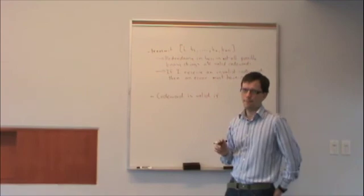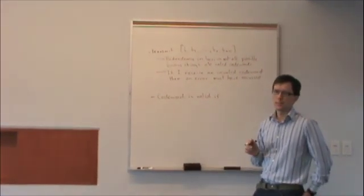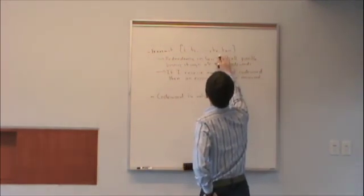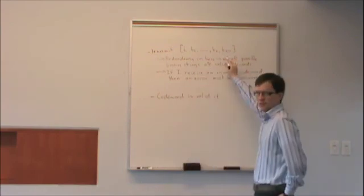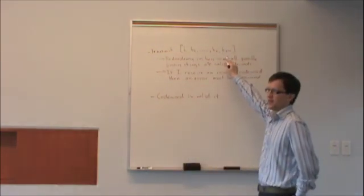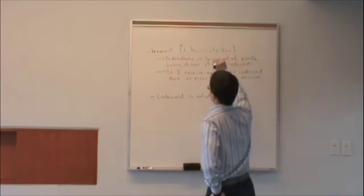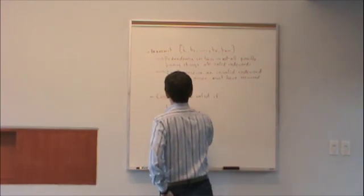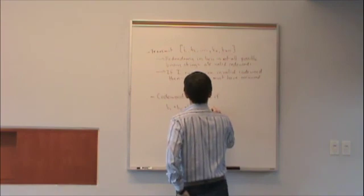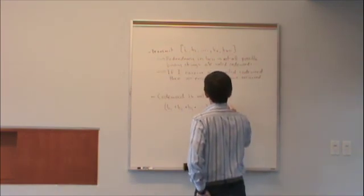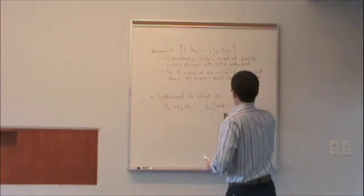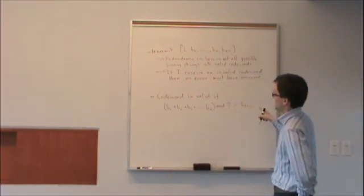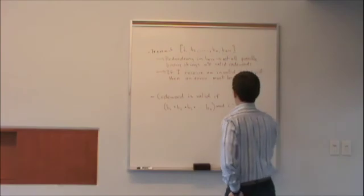Does anybody know what it is? Obviously you could just calculate B1 through BK, take it mod 2, and check to see if BK+1 matches. But what does that mean in practice? Basically, if B1 + B2 + B3 + ... + BK mod 2 equals BK+1 — if this is true at my receiver — then no error has occurred.